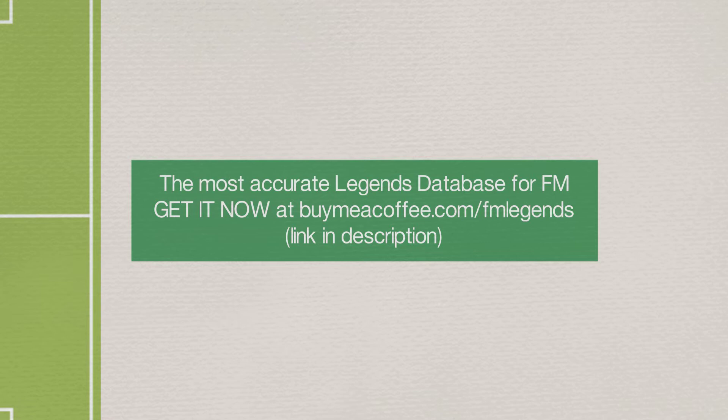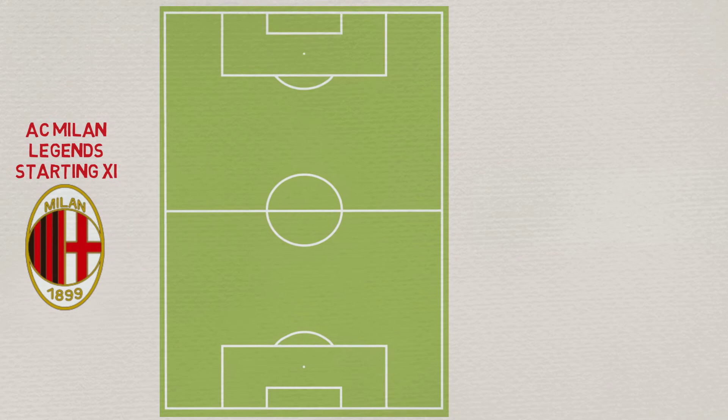The Milan legends manager is Arrigo Sacchi. His formation is the 4-4-2.